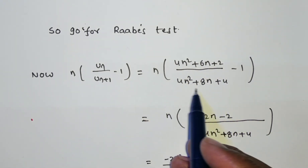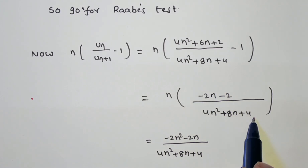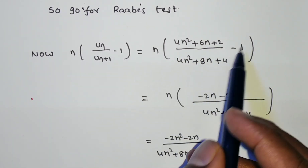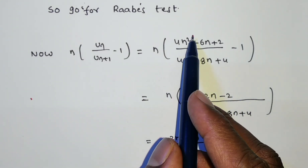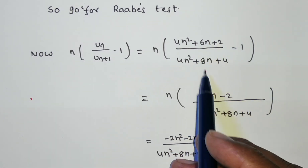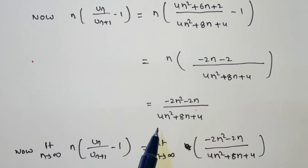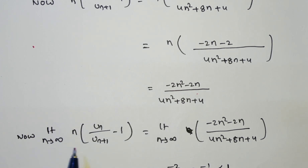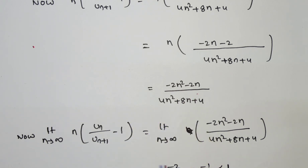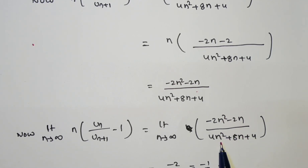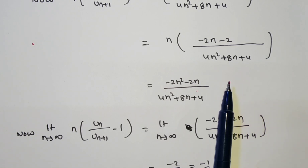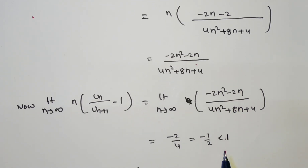We compute n times (u_n/u_{n+1} − 1). Taking the LCM, the numerator becomes (4n² + 6n + 2) − (4n² + 8n + 4) = −2n − 2, and the denominator is 4n² + 8n + 4. So n times (u_n/u_{n+1} − 1) = n(−2n − 2) / (4n² + 8n + 4). Applying the limit as n → ∞, the leading coefficient of n² in the numerator is −2 and in the denominator is 4, giving the limit as −2/4 = −1/2.